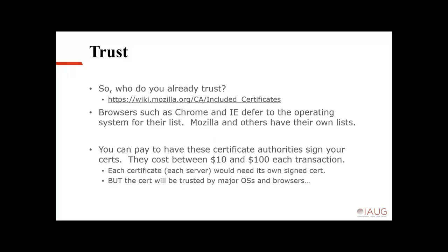You can pay to have certificate authorities sign your certs — they usually cost between $10 and $100 for each transaction. Some certificates can actually cost thousands of dollars. There are additional properties like extended validation, where your bank's website shows a green padlock with the company name in the address bar — you can pay extra for that. But a phone doesn't care that you paid extra for a certificate; a browser does but a phone does not. So find the cheapest certificate you can find that's trusted by the devices you're trying to deal with — it works all the same way when securing voice systems.